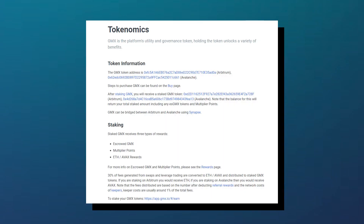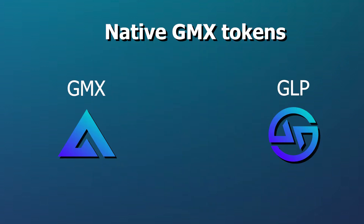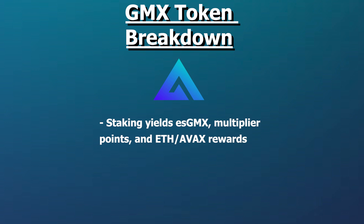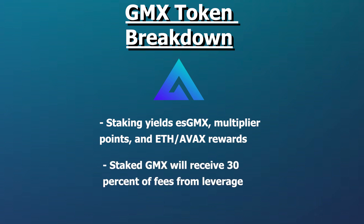Let's also cover the GMX tokenomics. GMX has two native tokens: GMX and GLP. GMX can be staked by users in order to receive escrow GMX, multiplier points, and ETH/AVAX rewards based on the chain being used. 30% of fees generated from swaps and leverage trading are converted to ETH/AVAX and distributed to staked GMX tokens.